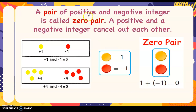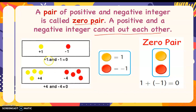A pair of positive and negative integer is called a zero pair. A positive and a negative integer cancel out each other. When you add integers with positive and negative numbers, a pair of one positive and one negative cancels out because it represents zero — it doesn't have any value anymore. One yellow and one red means zero. So one plus negative one is zero — that's a zero pair.